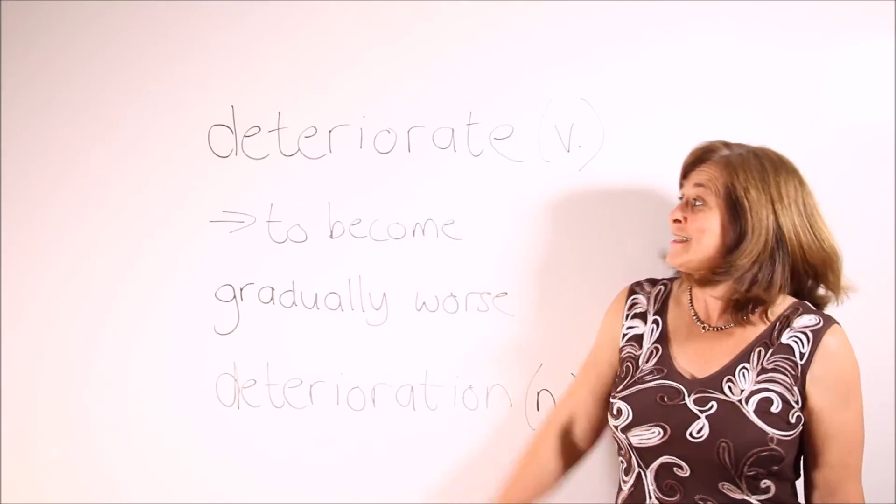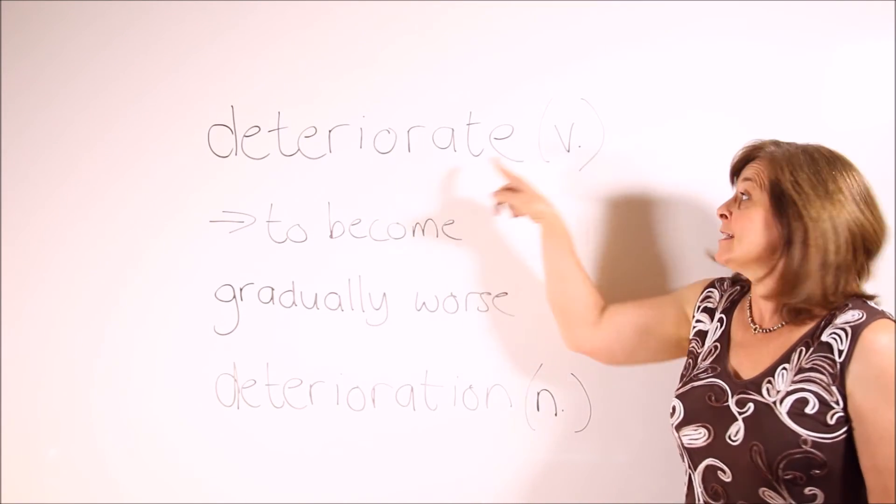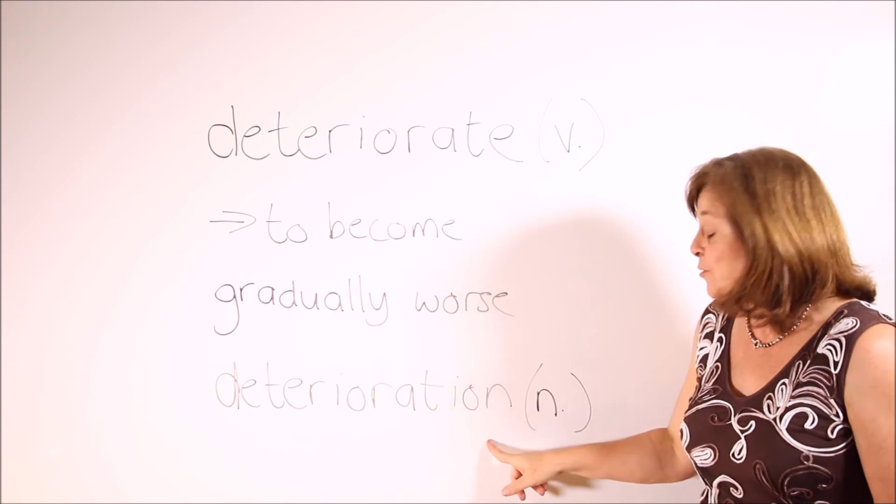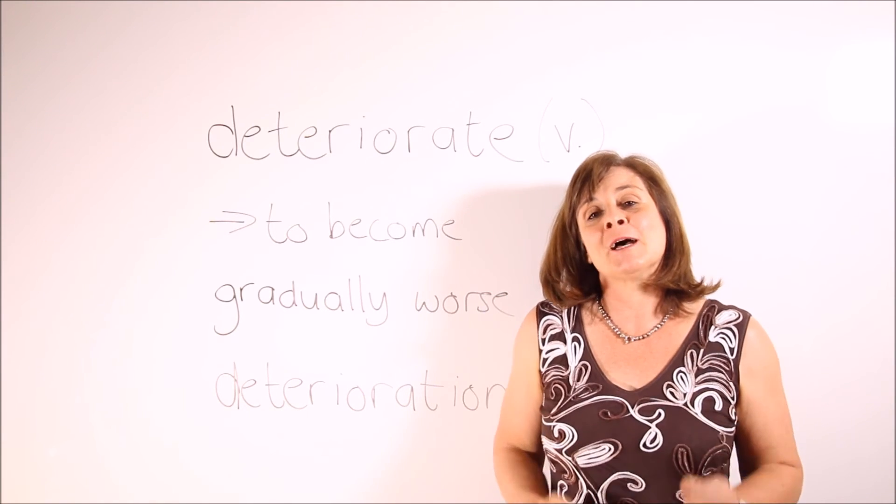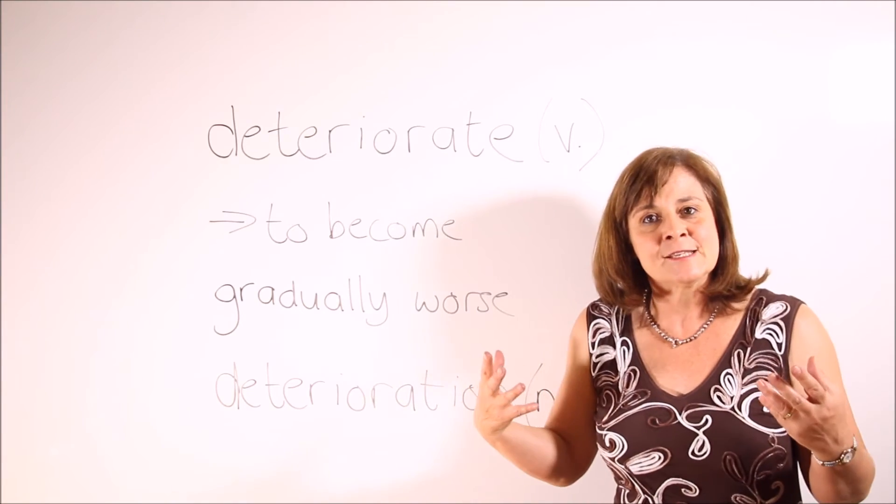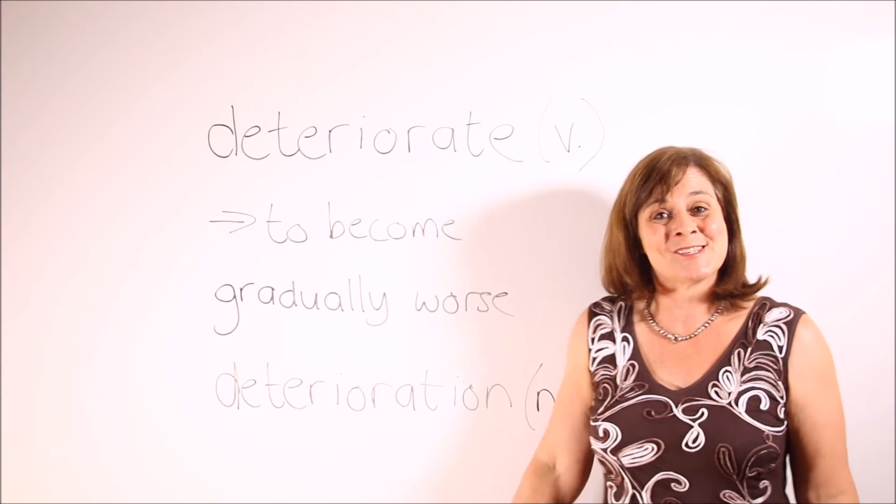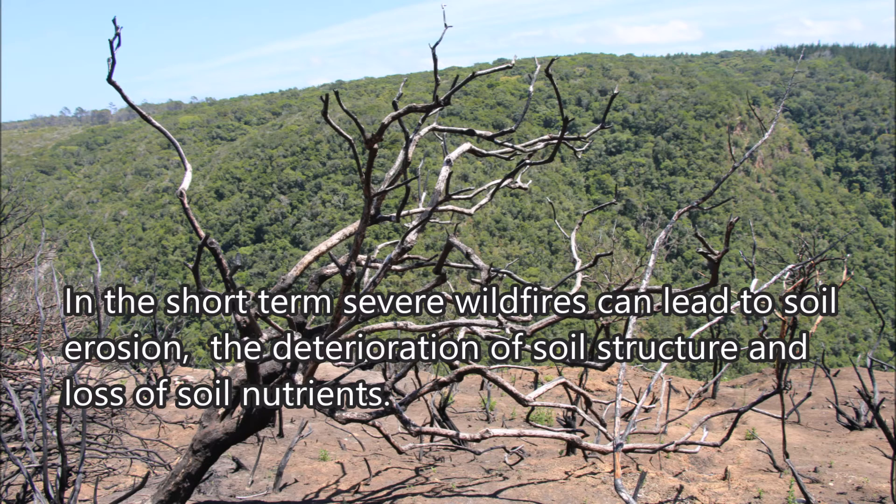Our last two words are deteriorate and deterioration. Deteriorate is a verb and it means to become gradually worse. And deterioration is the noun that we use to refer to that state of becoming gradually worse. For instance, when a habitat deteriorates, it becomes gradually worse. Here is a sample sentence. In the short term, severe wildfires can lead to soil erosion, the deterioration of soil structure and loss of soil nutrients.